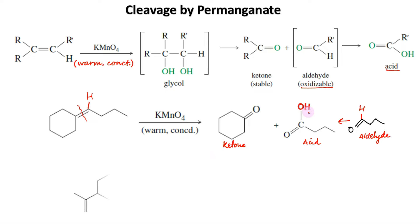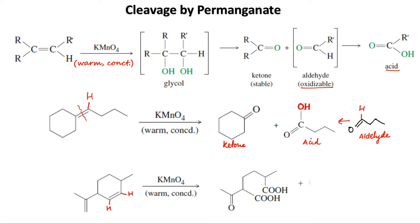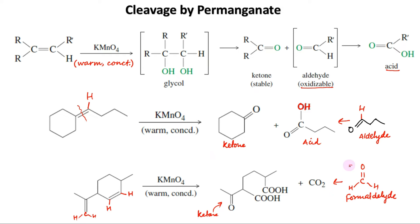In this second example, two double bonds are present and both will be oxidized. Both double-bonded carbons in the ring have hydrogen attached, so these will first be converted into aldehydes and then oxidized to carboxylic acids. The other double-bonded carbon has two alkyl groups and will be converted into a ketone, whereas the methylene carbon attached to two hydrogens will first be converted into formaldehyde, which will then be oxidized to carbon dioxide.